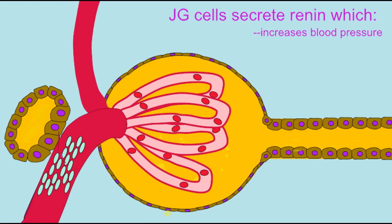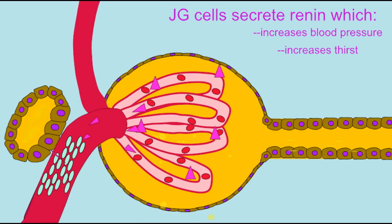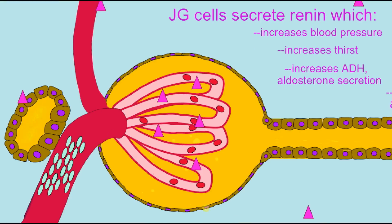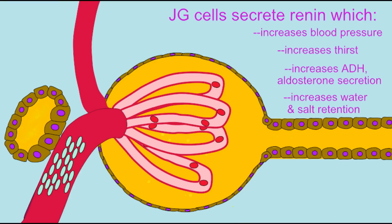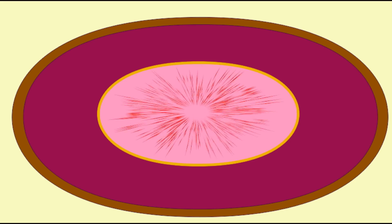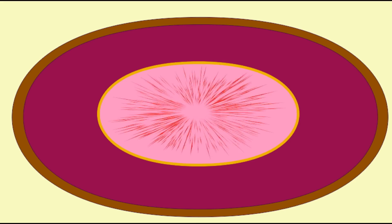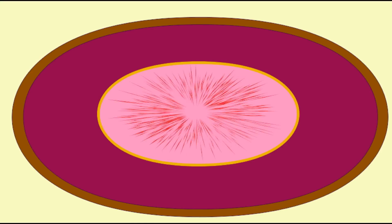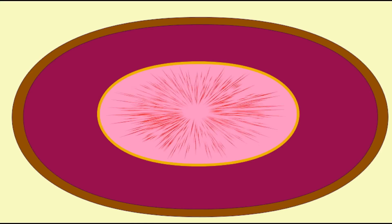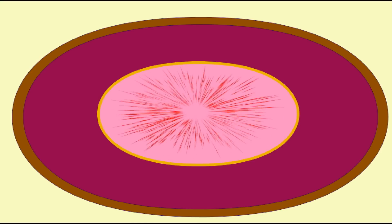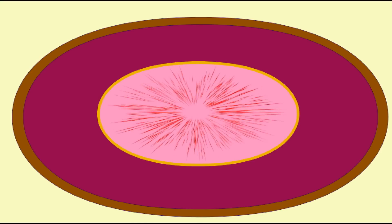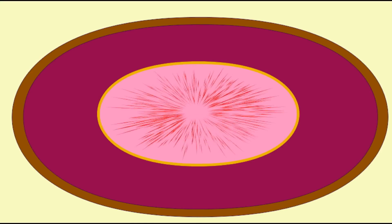Angiotensin II affects blood pressure through four separate mechanisms. First, it causes vasoconstriction of the smooth muscle in the tunica media, and this raises blood pressure.